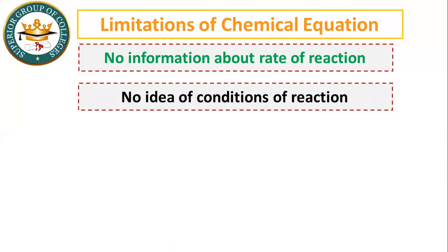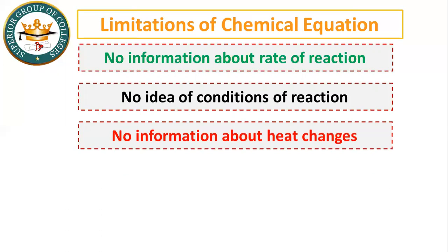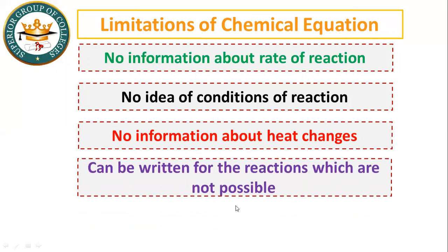Another limitation: no idea of the conditions of reaction. From a balanced chemical equation, we cannot determine the temperature, pressure, or catalyst required — those must be found by experiment. Also, a chemical equation cannot tell us whether a reaction is endothermic or exothermic, or whether heat is evolved or absorbed. Furthermore, a chemical equation can be written even for reactions that are not actually possible.